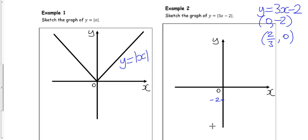And if the modulus signs were not there, this is how it would look, crossing the x-axis there at 2 thirds.